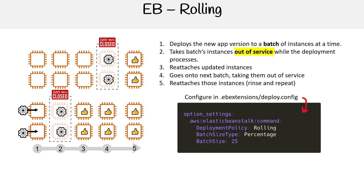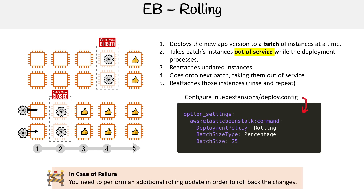Here's the same diagram taking 25% out of service. In case you need to rollback changes, you'll need to perform an additional rolling update in order to do so.